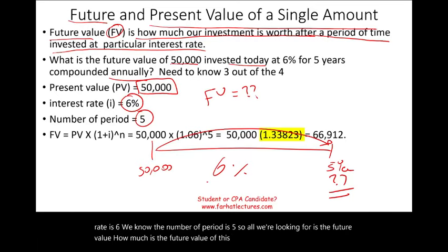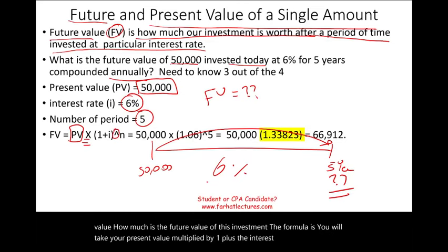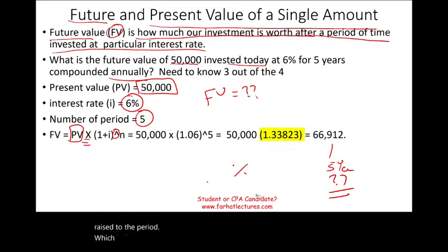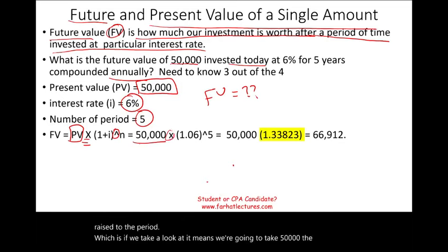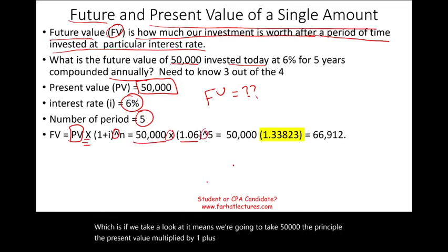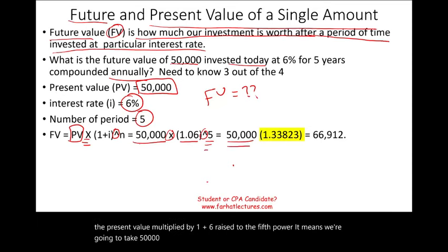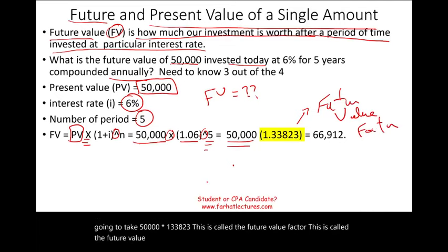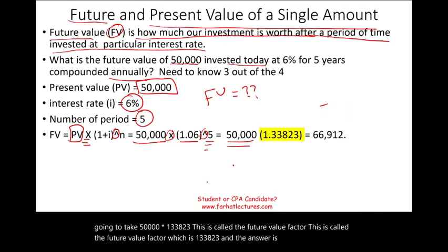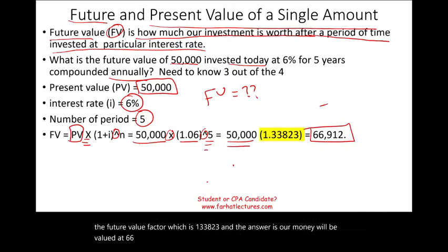The formula is: present value multiplied by (1 + interest rate) raised to the power of the period. So we take $50,000 multiplied by (1 + 0.06) raised to the fifth power, which equals 50,000 × 1.33823. This is called the future value factor. The answer is our money will be valued at $66,912.